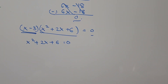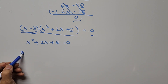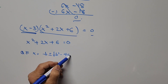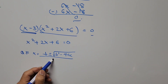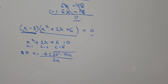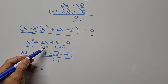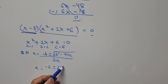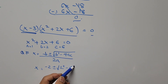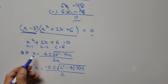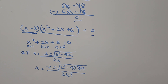We use the quadratic formula: x equals negative b plus or minus the square root of b squared minus 4ac, all divided by 2a. Here a equals 1, b equals 2, and c equals 6. Plugging in: x equals negative 2 plus or minus the square root of 2 squared minus 4 times 1 times 6, all divided by 2.